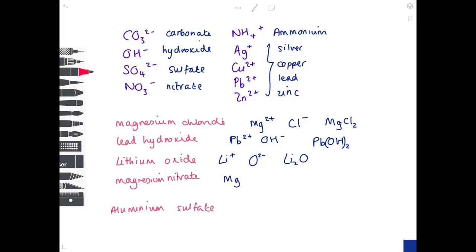Magnesium nitrate: magnesium is group two so Mg²⁺; nitrate must be learned from the list as NO₃⁻. The 1− charge on nitrate versus the 2+ on magnesium means you need two nitrate groups — giving Mg(NO₃)₂ with brackets. Don't move the 3 inside the formula — it remains part of the nitrate group.